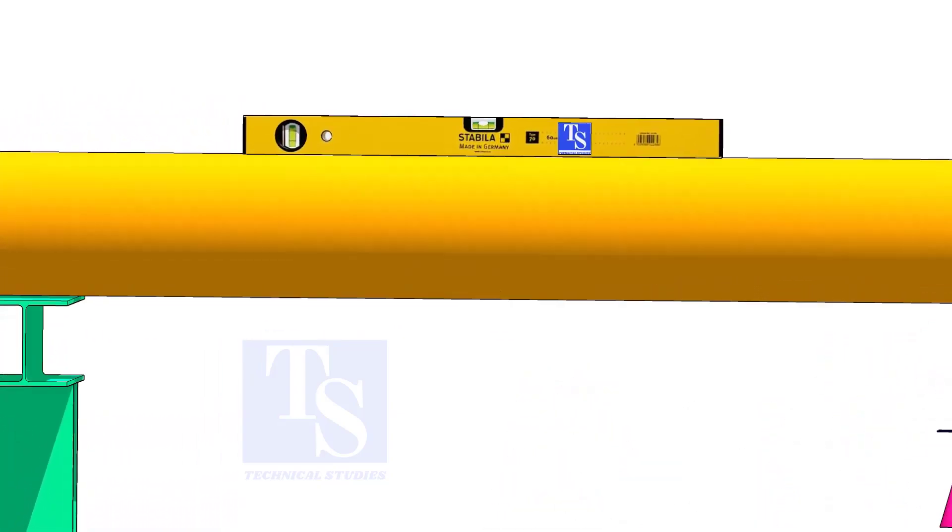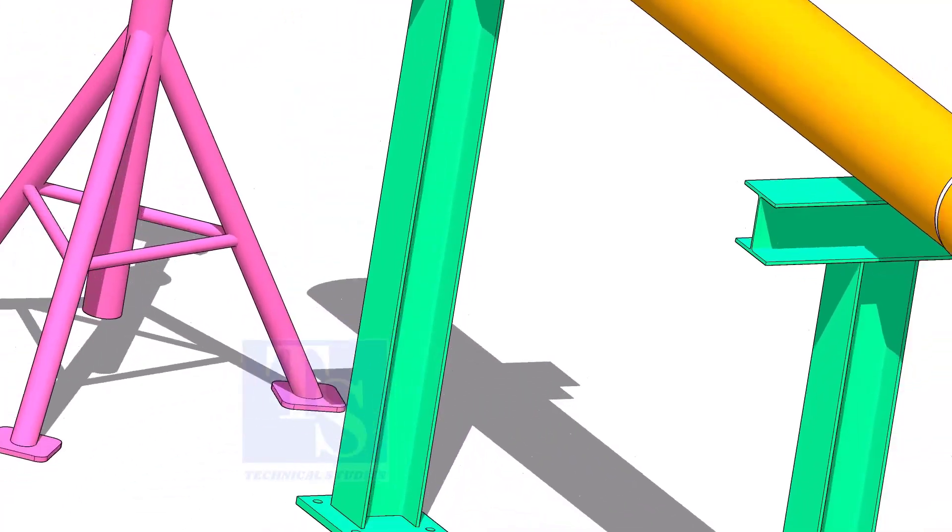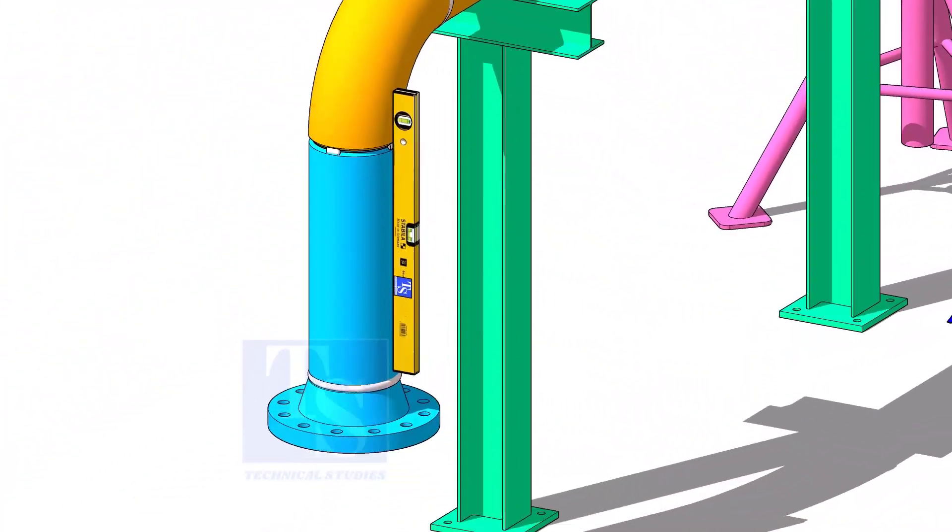Rotate spool number 2 vertically as shown and level the pipe. This position will ease the fit up of spool 4.